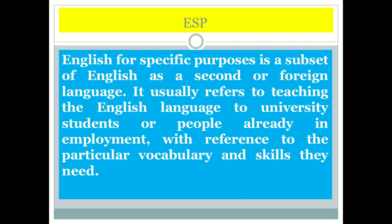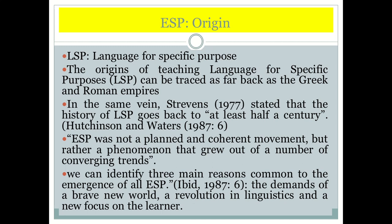ESP is an offshoot of ELT — English Language Teaching — and is a subset of English as a second or foreign language. It usually refers to teaching English to university students or people already in employment or in a profession. It is a form of adult teaching, with the concept that ESP learners will be adults who need specific vocabulary and skills relevant to their professions and fields.